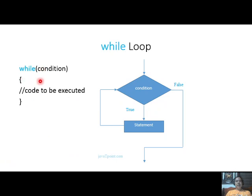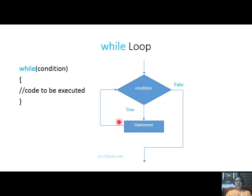This is the syntax for the while loop. You have 'while' followed by open and close parentheses, then the condition. If you have more than one statement, you use open and close braces. Looking at the flowchart, you have the diamond decision block for the condition. While it is true, the code executes and loops back.